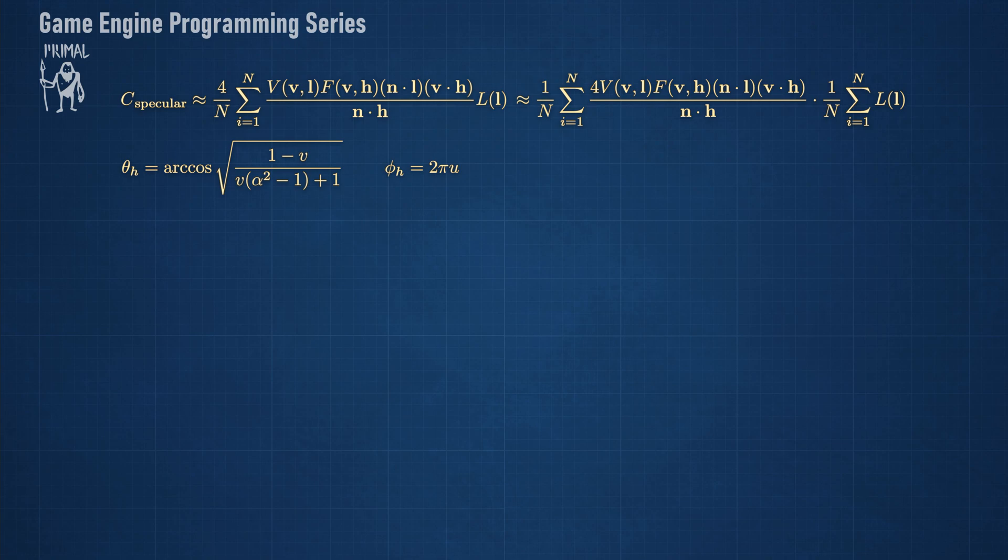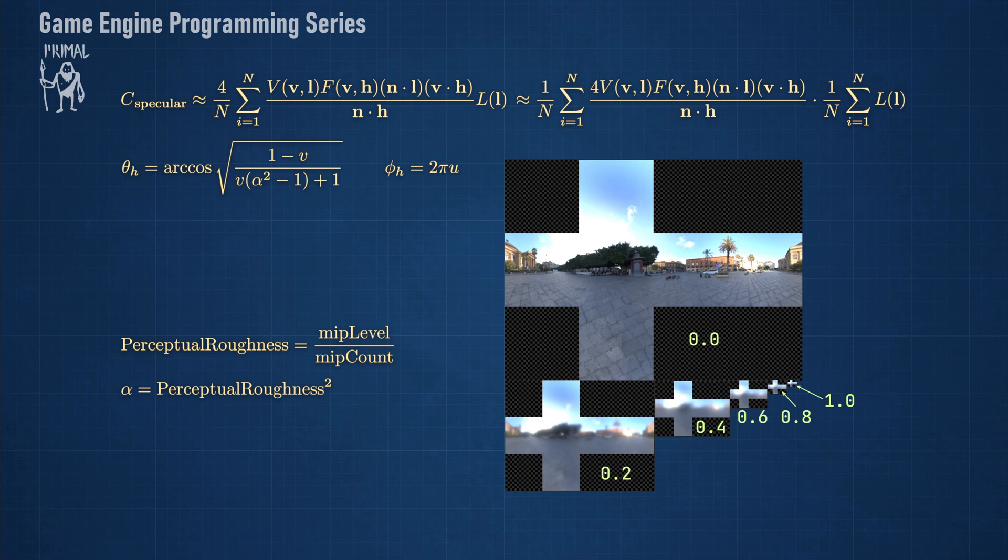Of course, we can't compute this average for every possible roughness value, but it is possible to do so for a few selected values. We saw that the sampling pattern becomes wider for higher roughness values and that results in blurrier images as we would expect.